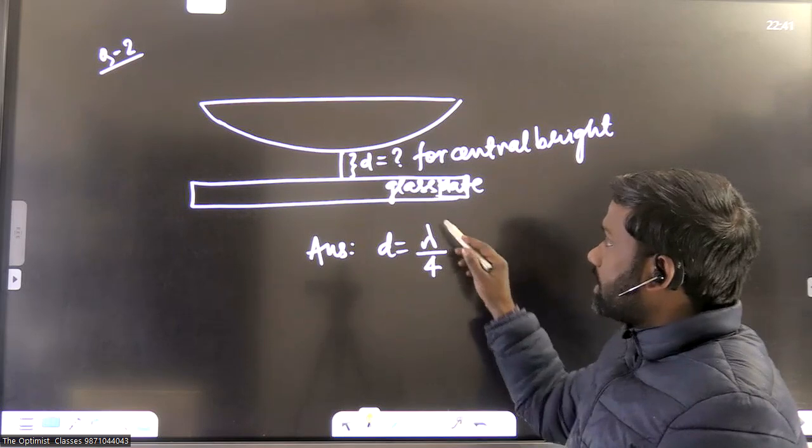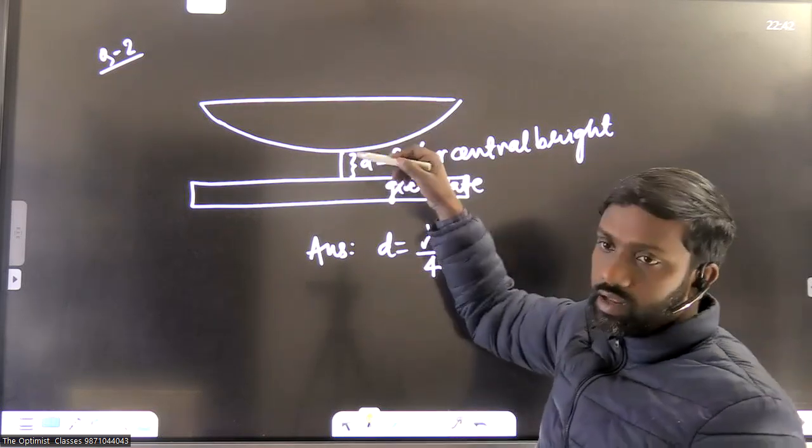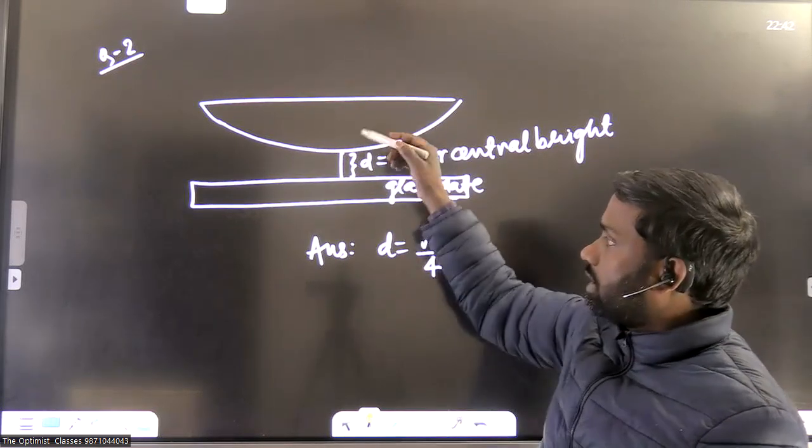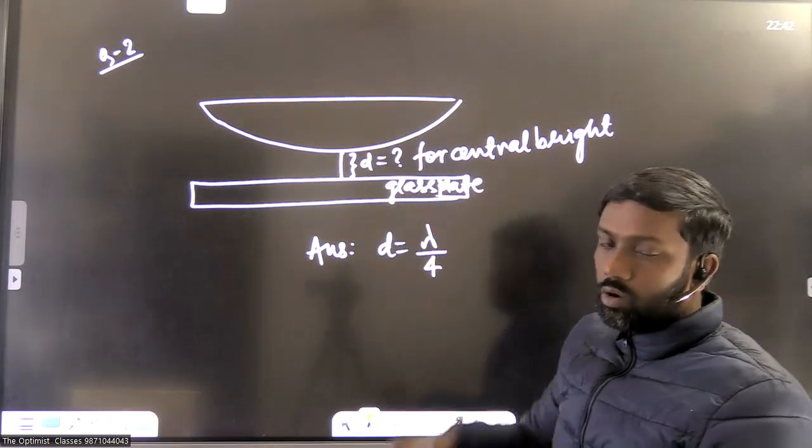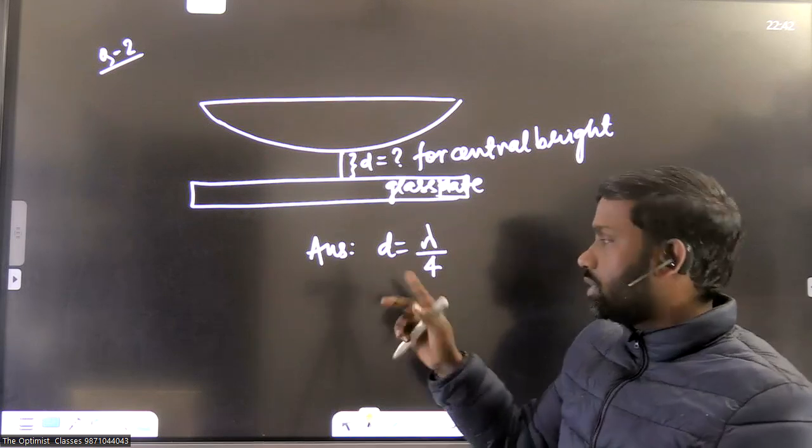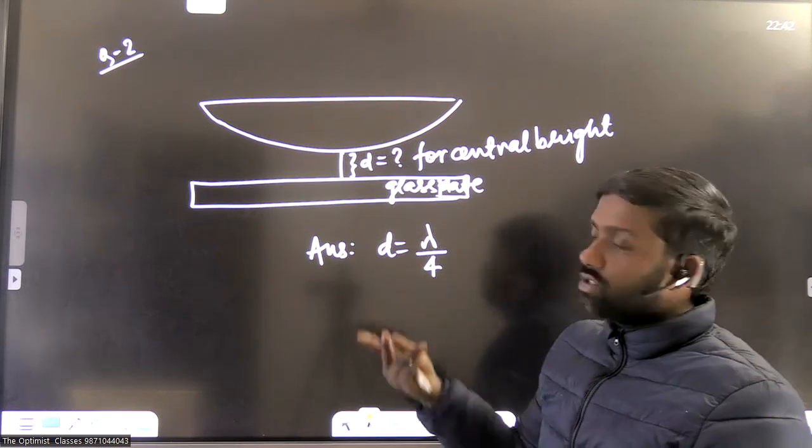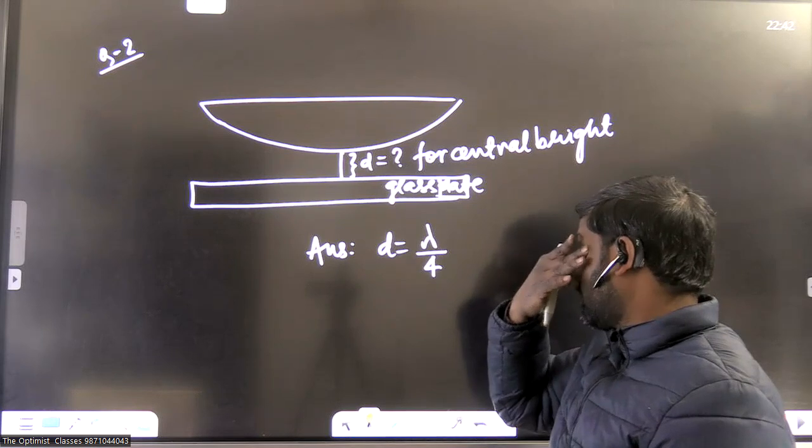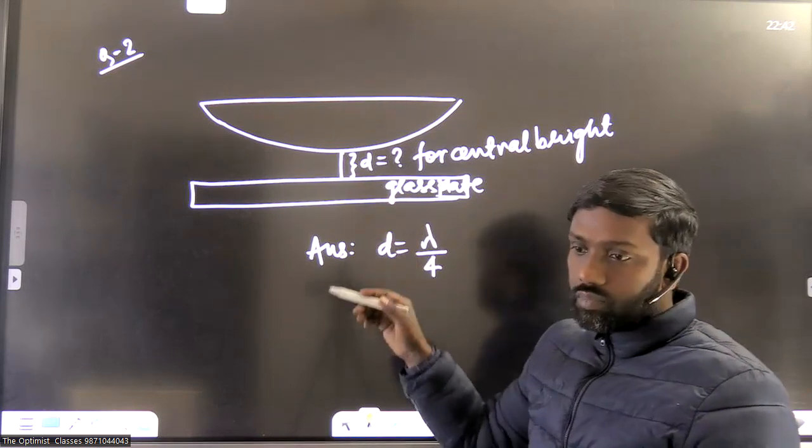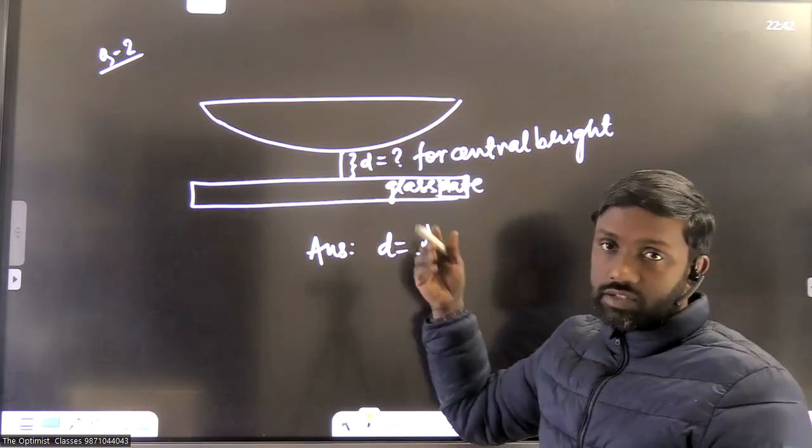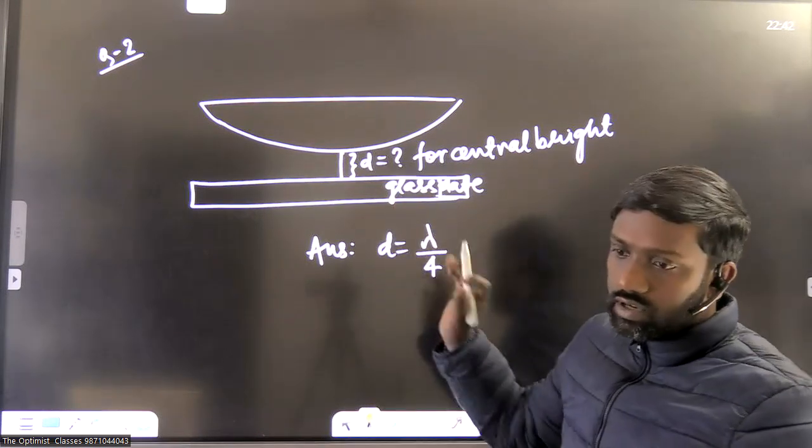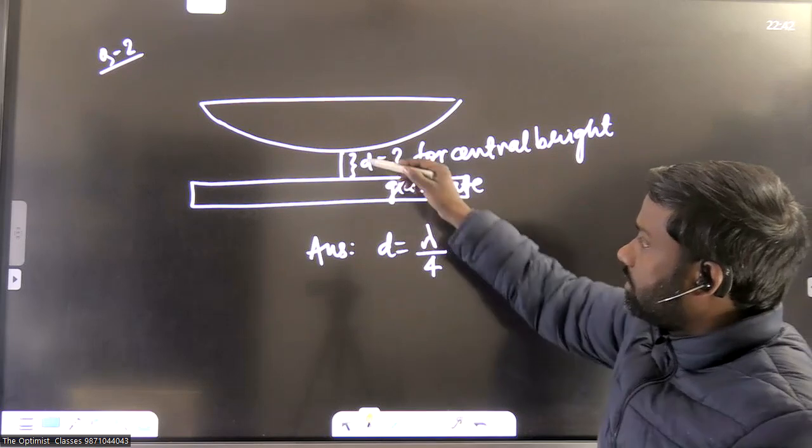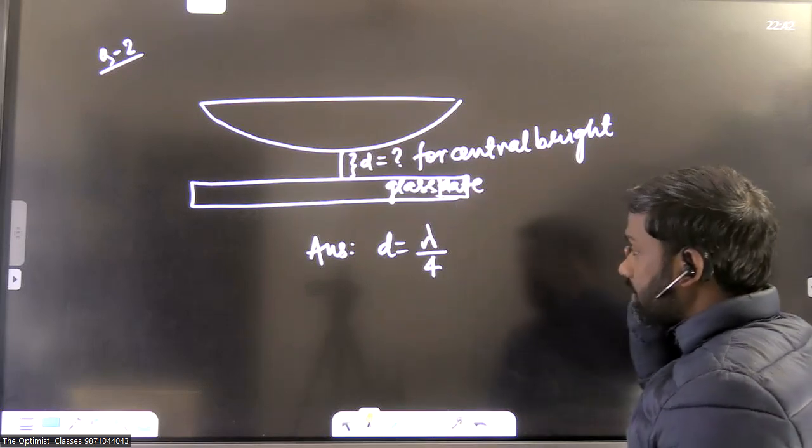This is lambda by 4, because if you lift it by lambda by 4, the extra path difference will be lambda by 2. And we know that there is already a path difference of lambda by 2. So lambda by 2 plus lambda by 2, you will get lambda path difference. That will satisfy condition for constructive interference. So basically here answer is lambda by 4. I'm not giving you too much explanation. Correct answer for this will be lambda by 4.